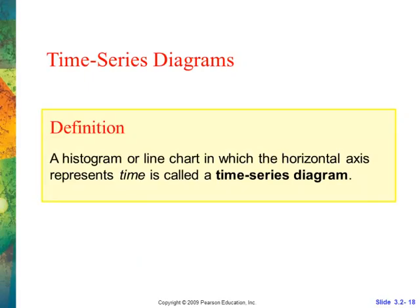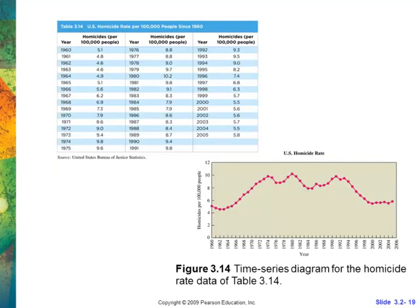A time series is a histogram or a line chart where the horizontal axis is time. We don't care if it's minutes, hours, decades, centuries. It has to be time though. Notice here they have all the years from 1960 up to 2005, and they're looking at homicide rates. It's nice because you can see over time what's happening. Notice we had an increase, then we had a big drop off and started to come back up, and now an even bigger drop off. This is what a time chart is. It's just so you can look at what's happening to something over time.